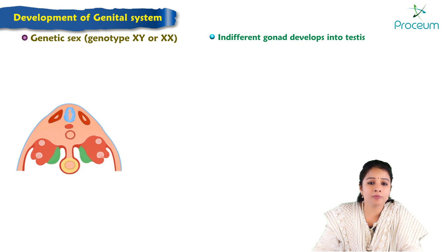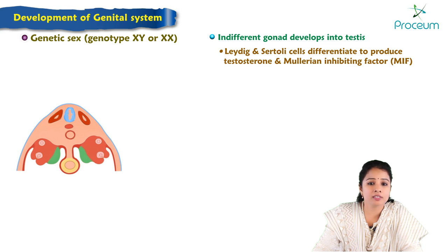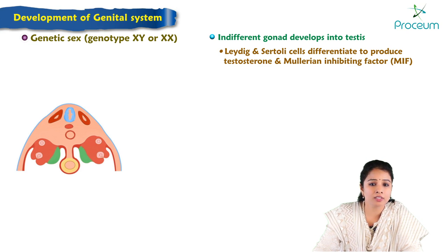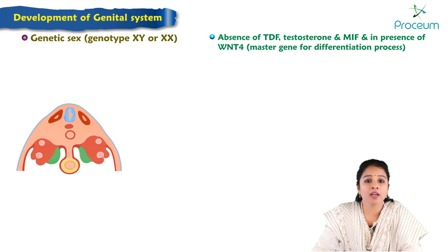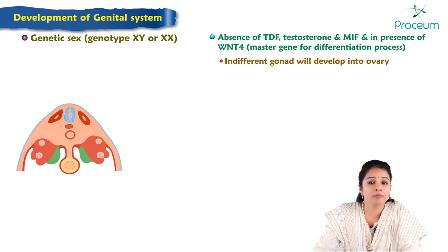As the indifferent gonad develops into a testis, the Leydig and Sertoli cells differentiate to produce testosterone and Müllerian inhibiting factor, MIF. This leads to a phenotypically male embryo. In the absence of TDF, testosterone, and MIF, and in the presence of the WNT4 gene and MASS — the master gene for differentiation of female gonads — the indifferent gonad develops into an ovary and the embryo is phenotypically female.